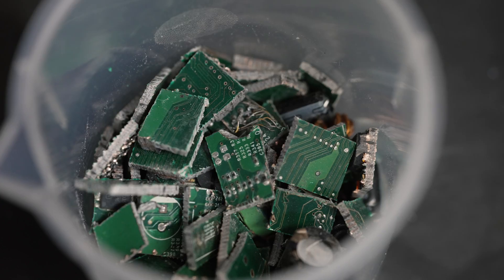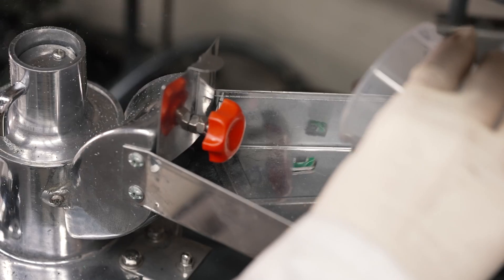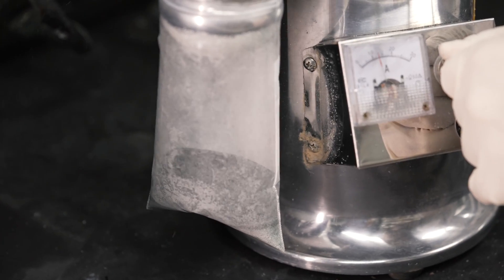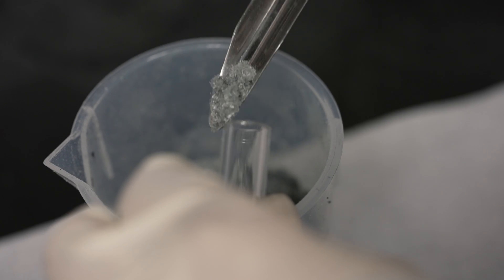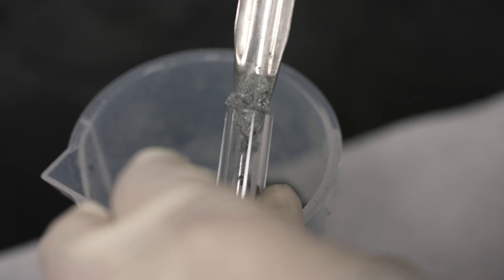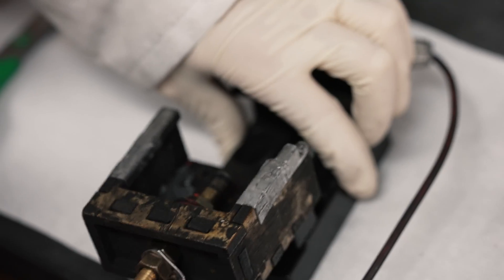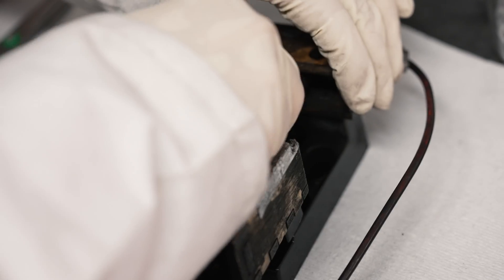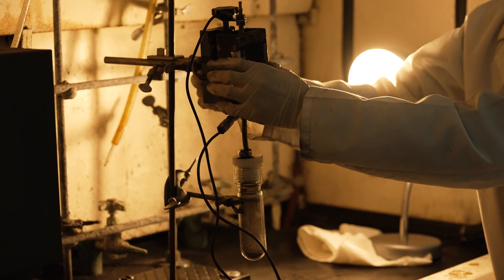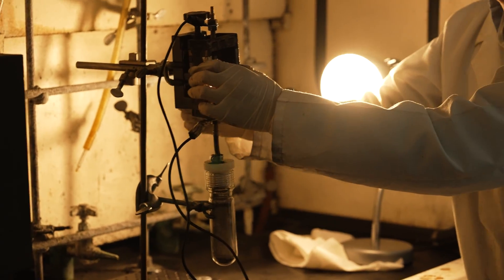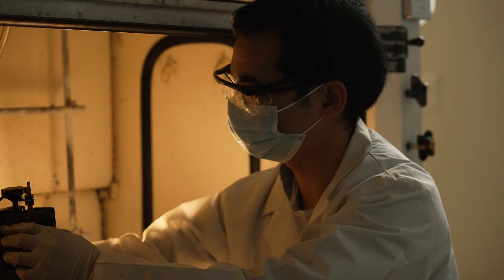But what we found is we can take printed circuit boards, line them up and subject them to flash jewel heating. This is a system that we built for making graphene, but now what we do is we put just the ground-up printed circuit board into this reactor.